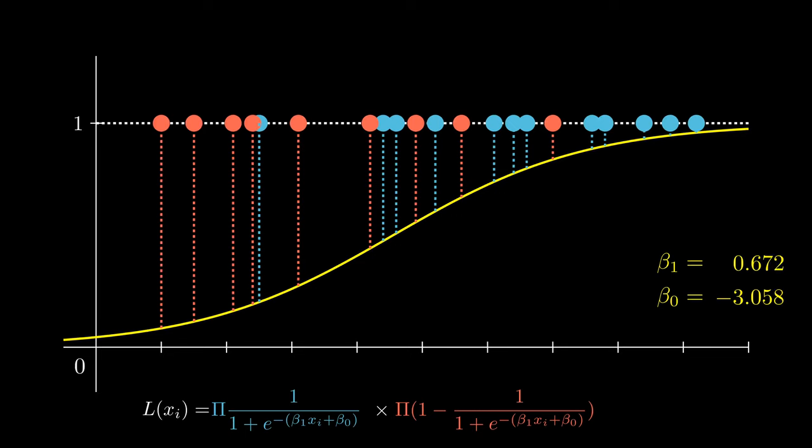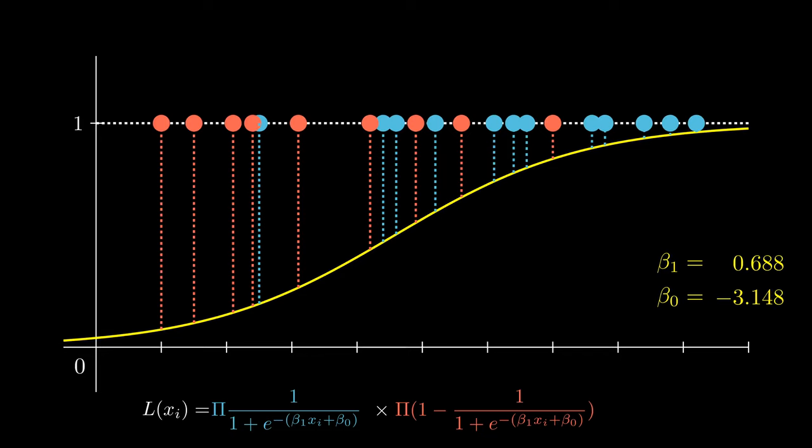You might be wondering, why did I subtract the false cases from 1.0? This is because we have to treat the false cases as positives so that they are maximized as well. We will cover this in a separate video talking about maximum likelihood estimation in more depth.